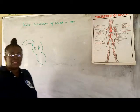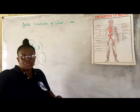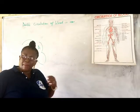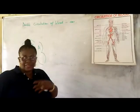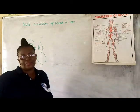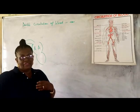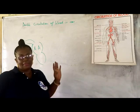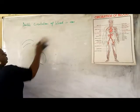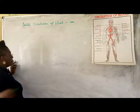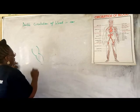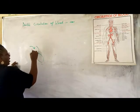Now, in some textbooks they will put it to be plural — vena cavae — showing that there is a superior and an inferior vena cava, meaning there are parts of your body that are above your heart and parts below. But for the sake of this class, let's just say vena cava. Blood comes into the heart through the vena cava, into your right atrium.